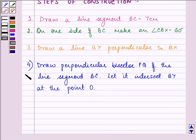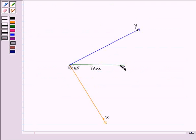Now the fourth step is to draw a line segment BC. Let it intersect BY at the point O. Now here we need to draw a perpendicular bisector of BC which will intersect BY at O.